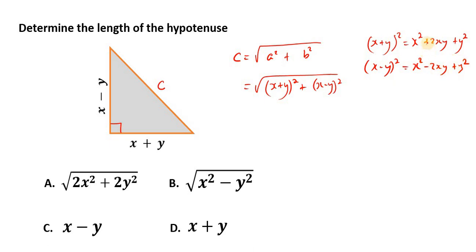Notice the difference. In the expansion of this binomial, when we're squaring it, we have a plus. In the expansion of this one, we have a minus for the middle term.